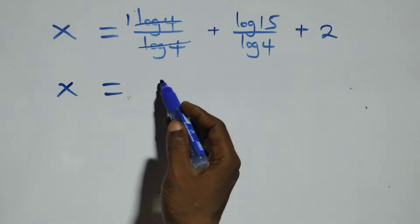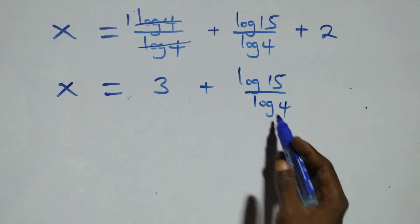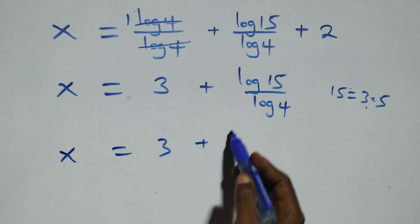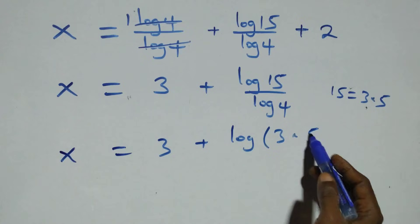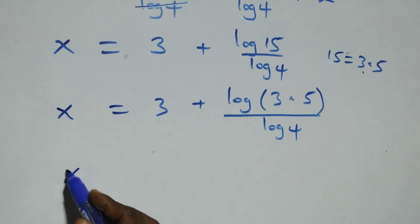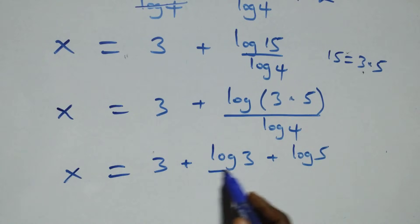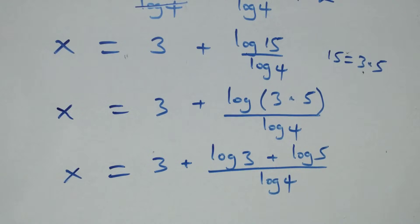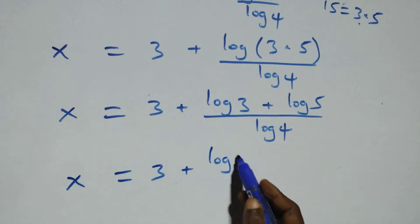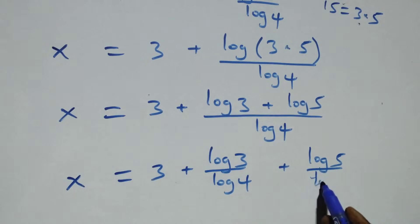We have log 4 cancel each other, leaving 1. So x equals 1 plus 2 plus log 15 over log 4, that is x equals 3 plus log 15 over log 4. Also, 15 can be expressed as 3 times 5. We apply the product rule of logarithms and have x equals 3 plus log 3 plus log 5 over log 4. Separating into two fractions gives x equals 3 plus log 3 over log 4 plus log 5 over log 4.